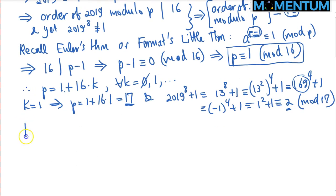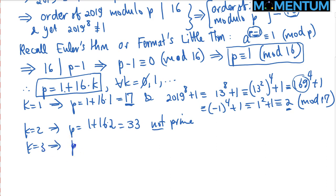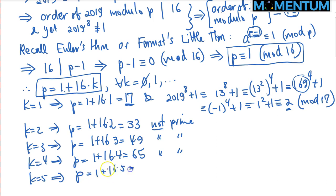Next we can try K equals 2. That would imply P is equal to 1 plus 16 times 2, which is 33. This one is not prime, so we can skip this one. K equals 3: 1 plus 16 times 3 is 49. Again, not a prime. K equals 4: not a prime. K equals 5: P equals 1 plus 16 times 5 is 81, not a prime.